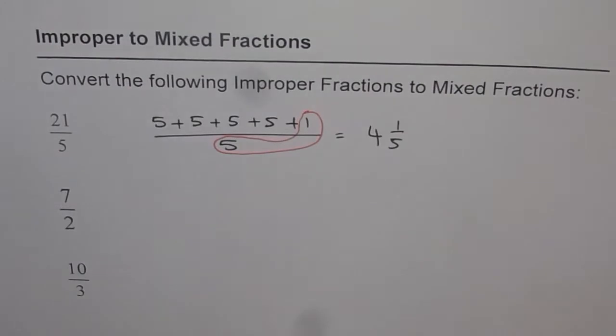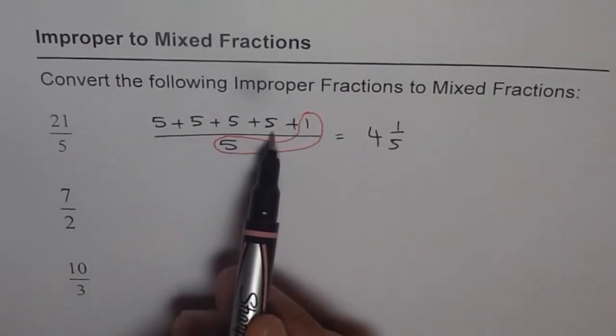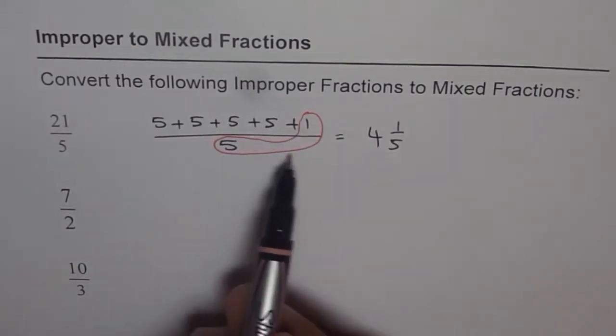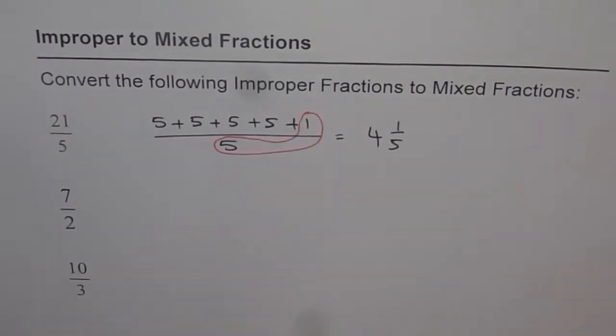4 fives means 4 whole numbers and you remain with 1 out of 5. So that becomes your mixed fraction. Do you see? You can do like that also. So you got all these 5's lined up. 1, 2, 3, 4. There goes 4 and 1 fifth.